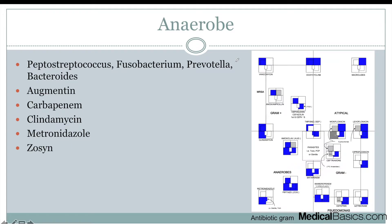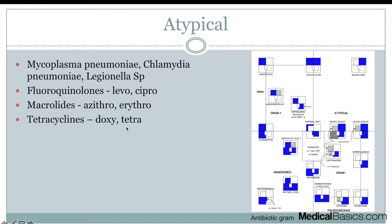Next: anaerobes. These are going to be common causes, and the medications that cover anaerobes are augmentin, carbapenems, clindamycin, metronidazole, and Zosyn. I memorized all of these using Sketchy Micro — thinking through all the antibiotics that had that little metro station in the Sketchy Micro images and remembering what those pictures represented. These are commonly asked: what are the anaerobes and what covers them?